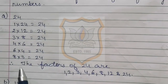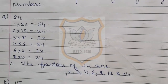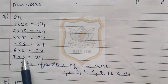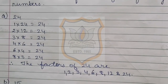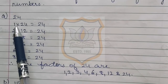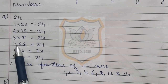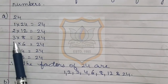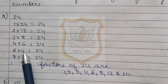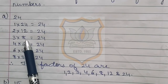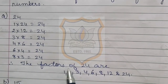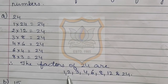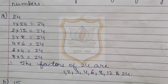Now we write the factors of 24 in U format, taking each number only once even if it appears twice. So the factors of 24 are: 1, 2, 3, 4, 6, 8, 12, and 24.